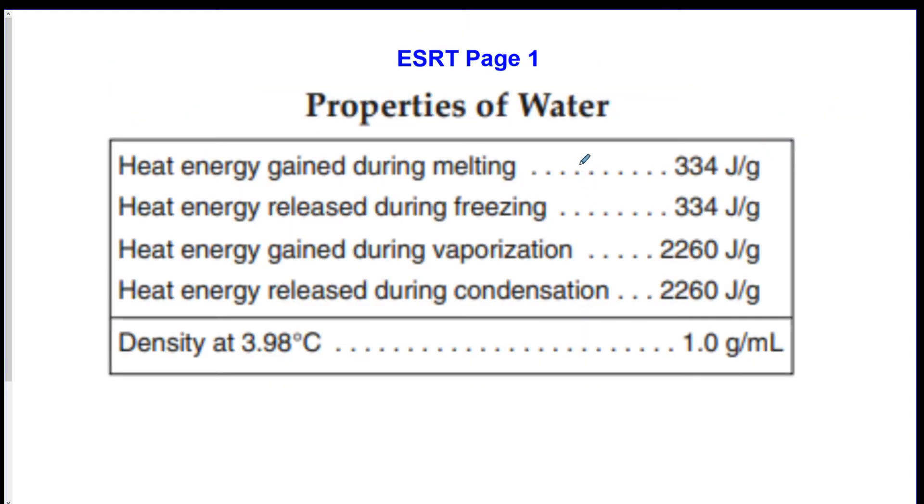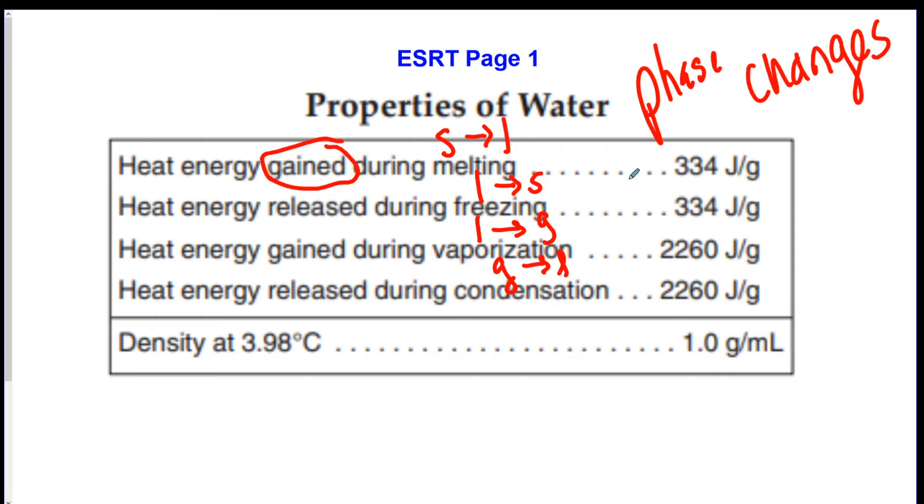That's this chart. And the next chart is properties of water, which is right underneath. This is on the front page as well. This has to do with phase changes. So like solid to liquid would be melting. Freezing would be liquid to solid. Vaporization is the same thing as evaporation or boiling. This is liquid to gas. And then condensation is turning a gas into a liquid. The thing to notice about this chart is that phase changes take heat energy to make it happen. You can either gain the heat energy, which would be in terms of melting, it would take 334 joules to melt it. Or you can take heat energy away, which is the same thing as saying heat energy released. So freezing, to freeze something, you would have to take away 334 joules. These guys are opposites.